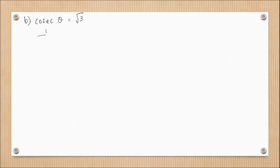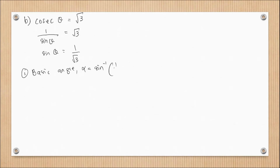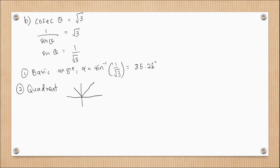Question 9b: cosecant θ = √3. First, rewrite cosecant as 1/sin θ, then simplify to get sin θ = 1/√3. Find the basic angle: arcsin(1/√3) = 35.26°. Next, determine the quadrant — since sine is positive, it is in quadrant one and quadrant two. So we have 35.26° in quadrant one and 35.26° in quadrant two.